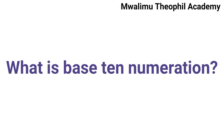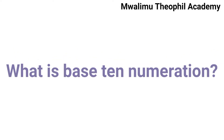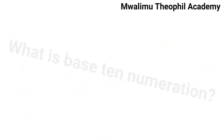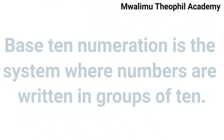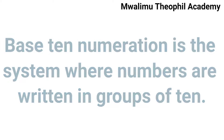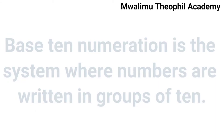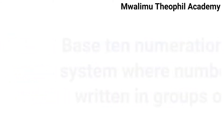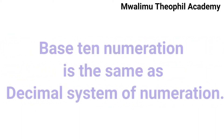What is base 10 numeration? Simply, when we say base 10 numeration, it is a system where numbers are written in groups of 10. Sometimes, the term base 10 numeration is also known as the decimal system of numeration.